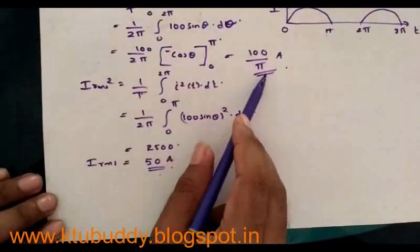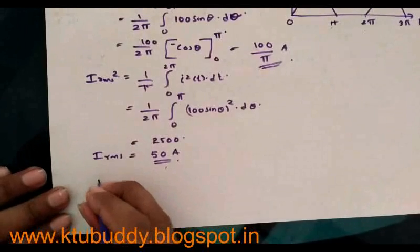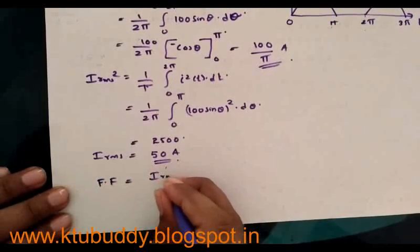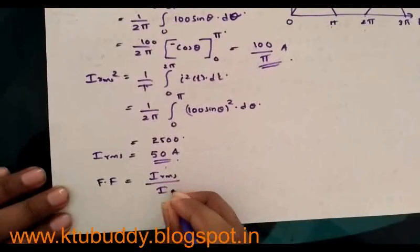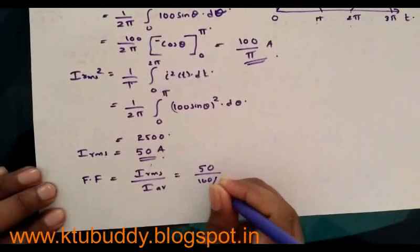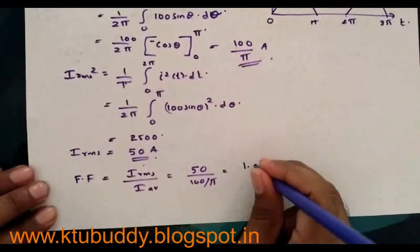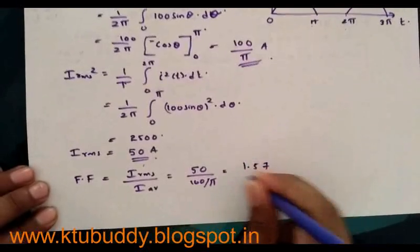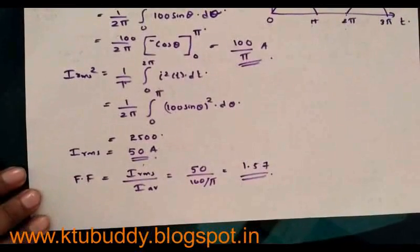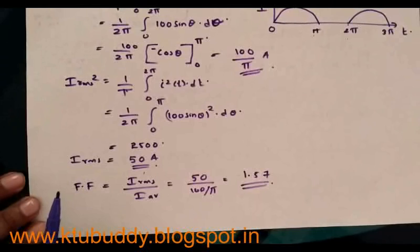The average value is 100/π. To determine the form factor, the formula is: form factor (FF) = i_rms / i_average = 50 ÷ (100/π) = 1.57. Therefore, the three quantities are: average value = 100/π, RMS value = 50 amperes, and form factor = 1.57. This is an important problem and we have to carefully work through these calculations.